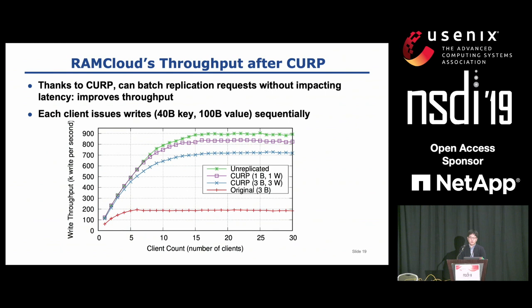CURP also improved the throughput of RAM Cloud. In CURP, syncing to backups is no longer in the critical path of an operation, so primaries can delay syncs to backups to batch the syncing. This batching improved RAM Cloud's throughput by about four times. And when comparing to the no-replication case, adding each backup-witness pair incurs about 6% overhead.